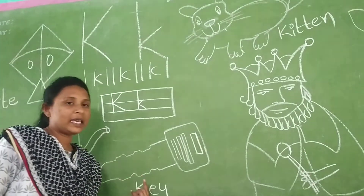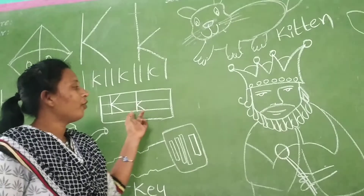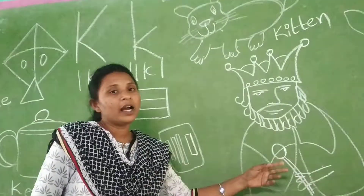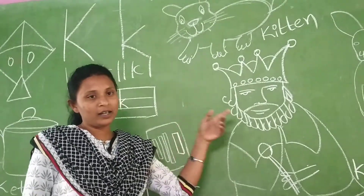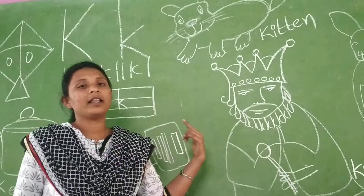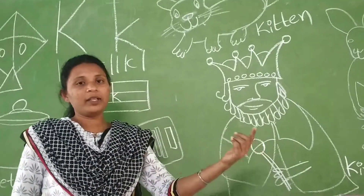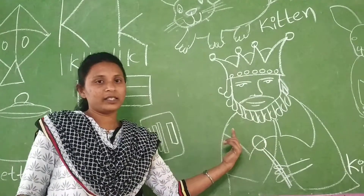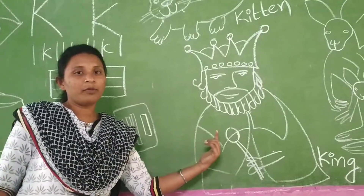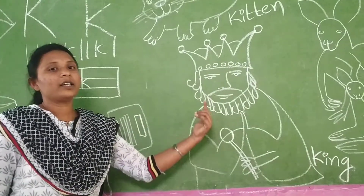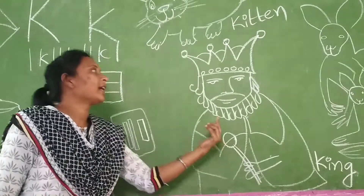K for King. King will rule the people. King and queen will rule the people. We have letters like C and O — like that, K for King.